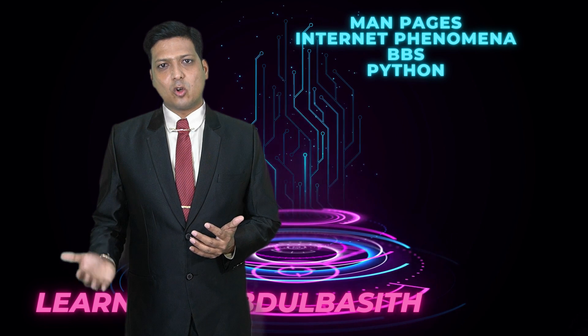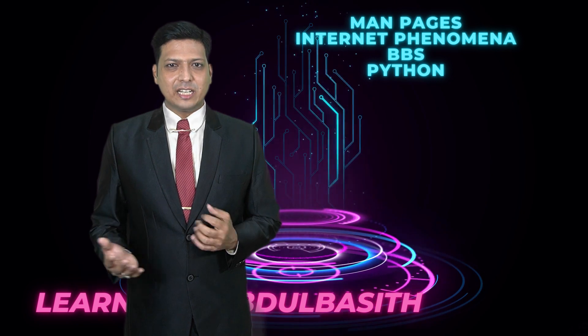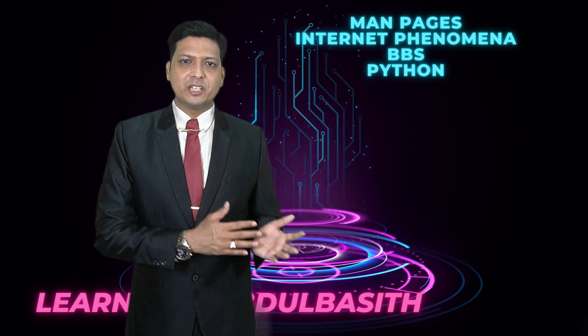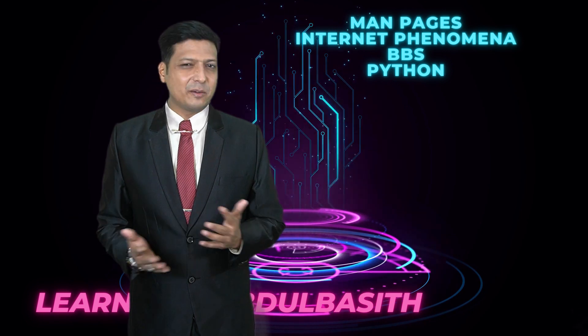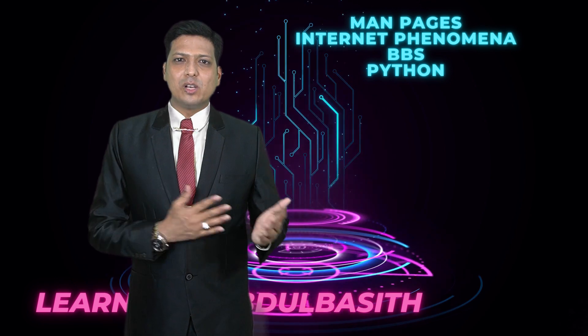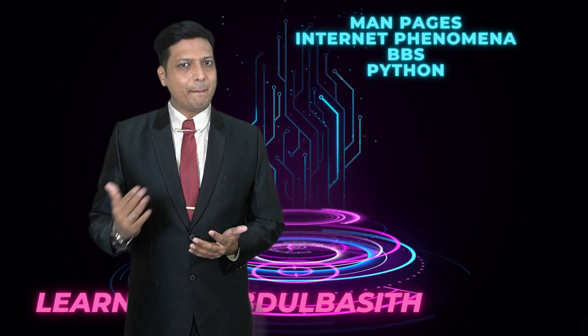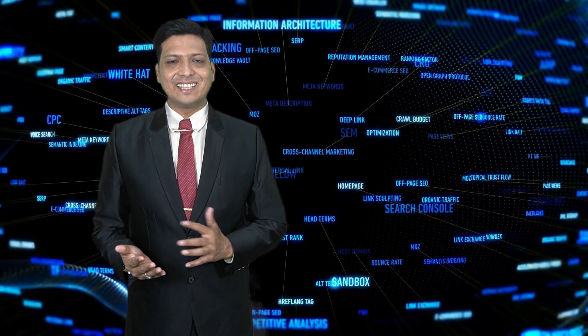It consists of BBS, Bulletin Board System, also known as Computer Bulletin Board System. This system will upload, download, write, and read data. ChatGPT consists of first man pages, second internet phenomena, third BBS or CBBS, and last it consists of Python. It is designed on Python, which is used to design different kinds of programs.